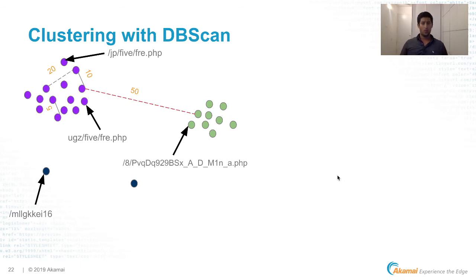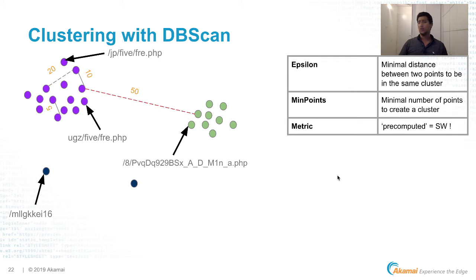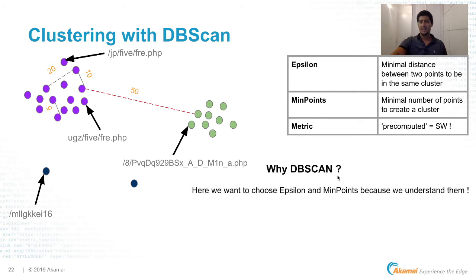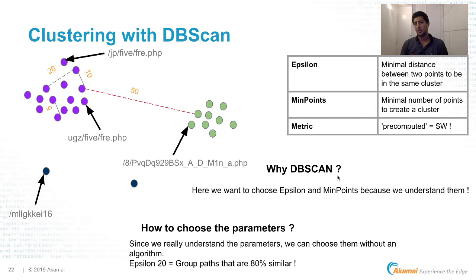Now let's look at the clustering. We have a distance, so we can plot the paths and cluster them into groups. We use DBSCAN, a popular unsupervised clustering algorithm. It takes two parameters: epsilon and minimum points. Epsilon tells you the minimum distance between two points to be in the same cluster. Minimum points is the minimum number of points required to form a cluster. You can pass the Smith-Waterman metric directly to DBSCAN. The reason we use DBSCAN is that, unlike many cases in data science, we actually understand what epsilon and minimum points mean. If we choose epsilon equal to 20, we are telling the algorithm to group paths that are 80 percent similar, which fits perfectly to our use case.